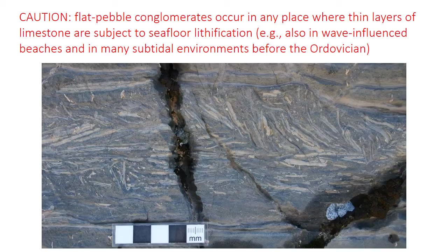When bioturbation is more common and intense, a thin layer of deposited sediment just gets homogenized and mixed up, meaning only thick beds can be preserved — and thick layers can't be ripped up and redistributed by storms. So flat pebble conglomerates basically disappear in normal marine environments after the Cambrian–Ordovician, although they're still found in beach and tidal flat environments.